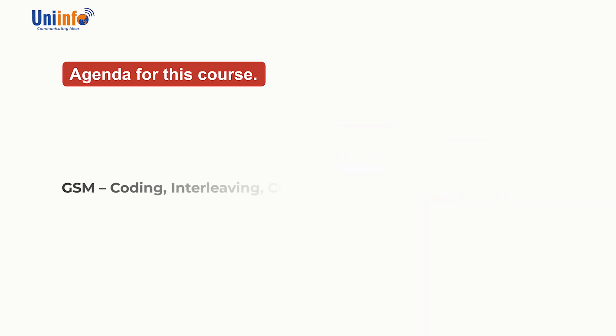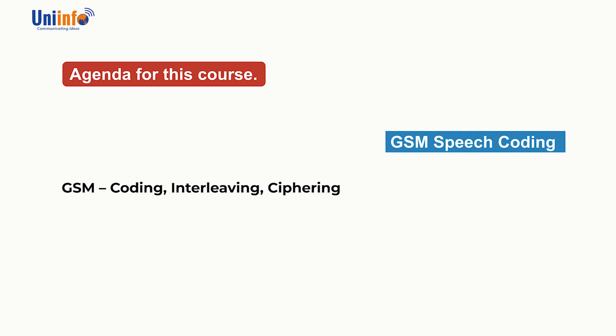GSM Coding, Interleaving, and Ciphering: We will discuss GSM speech coding, which converts an analog signal to a good quality digital signal. Channel Coding adds redundancy bits to the original information in order to detect and correct errors that occur during transmission.